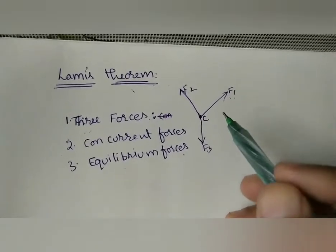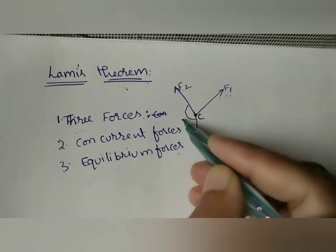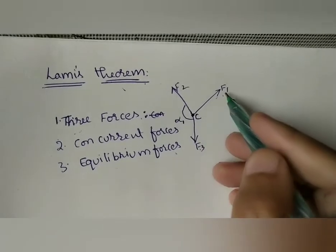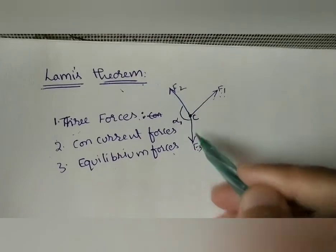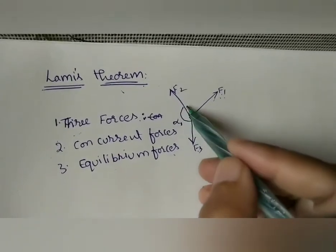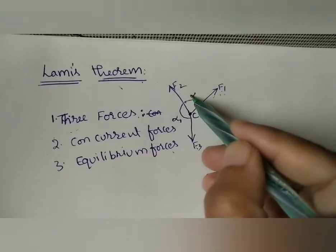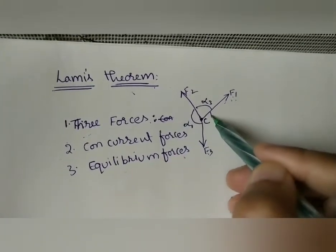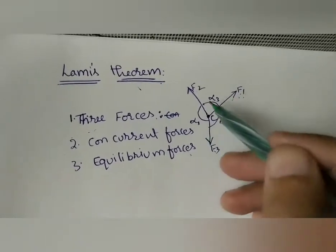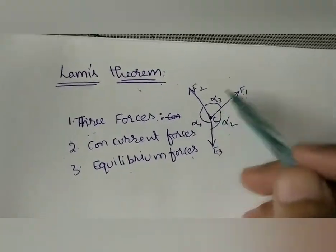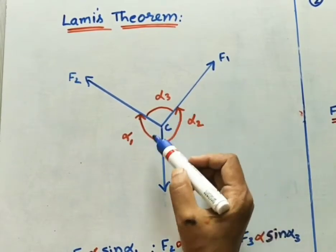Now let us also define the angles between the forces. The angle opposite to F1 — that is, the angle between the other two forces — is called alpha one. The angle opposite to F3 is alpha three, and the angle opposite to F2 is alpha two. The angle names alpha one, alpha two, alpha three are based on given values.